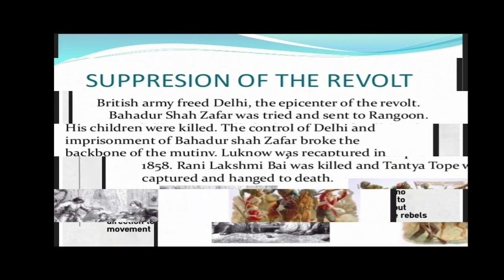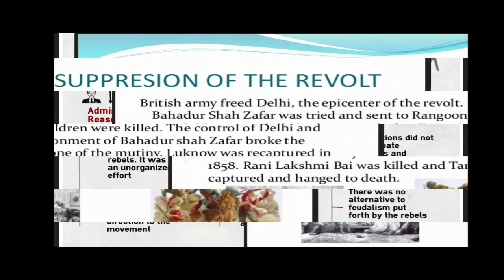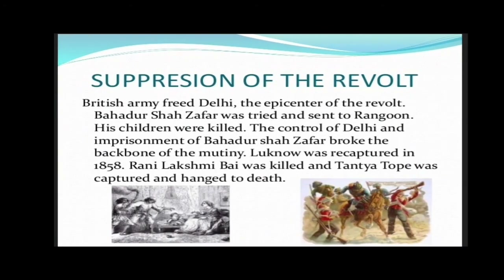Suppression of the revolt: The British Army freed Delhi, the epicenter of the revolt. Bahadur Shah Zafar was tried and exiled to Rangoon, and his children were killed. The fall of Delhi and imprisonment of Bahadur Shah Zafar broke the backbone of the mutiny. Lucknow was recaptured in 1858, Rani Lakshmibai was killed, and Tatya Tope was captured and hanged to death.